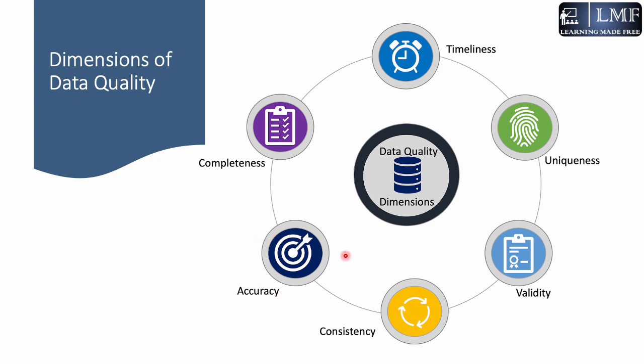The second important dimension is accuracy. This dimension measures the correctness of the data that can be verified by verifiable resources. The accuracy of data is super important to arrive at key business decisions.